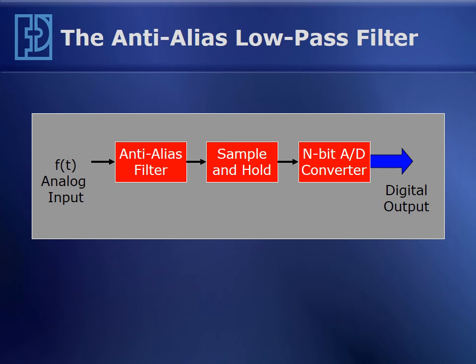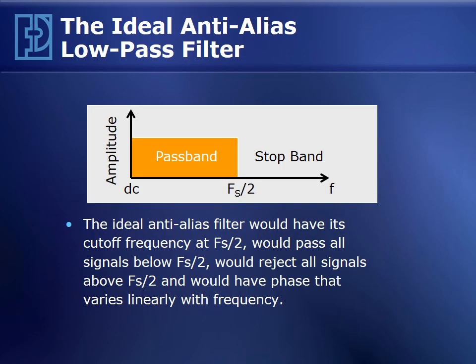In our block diagram of our digitizer, we now have an anti-aliasing filter on the front end that will sufficiently attenuate any spectral content in our analog input signal F sub T, such that it will not alias and corrupt our in-band measurement. The ideal anti-aliasing filter would look like a brick wall — perfectly flat pass band, then infinite attenuation slope reaching a stop band at half the sampling frequency, with infinite attenuation above that.